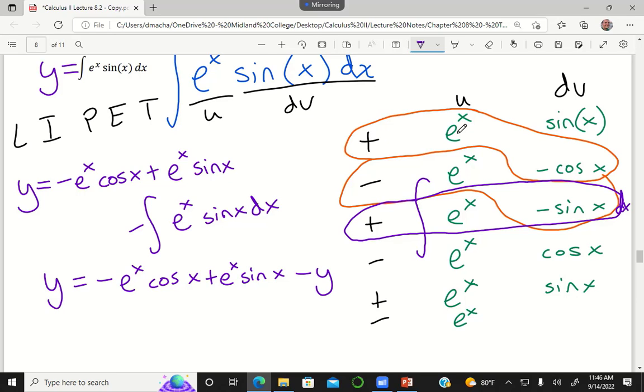But this is the trick that we're going to learn, is that eventually, whenever it comes down to like an e to the x times cosine or e to the x times sine, eventually, you have to stop whenever you see the original antiderivative appear in your table. And that's when you define that as your variable.